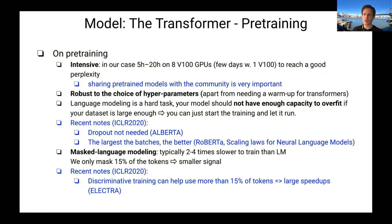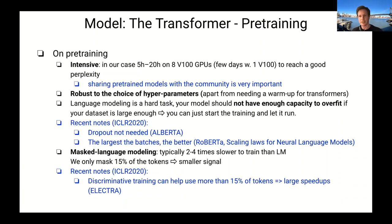Pre-training is quite computationally intensive. There are crazy reports about the cost to train BERT and other state-of-the-art models. For last year's tutorial, I tried to find a more reasonable cost: you roughly need about one day on eight GPUs to reach some good transfer learning models. We reached state-of-the-art on text classification training for like one day on eight GPUs.